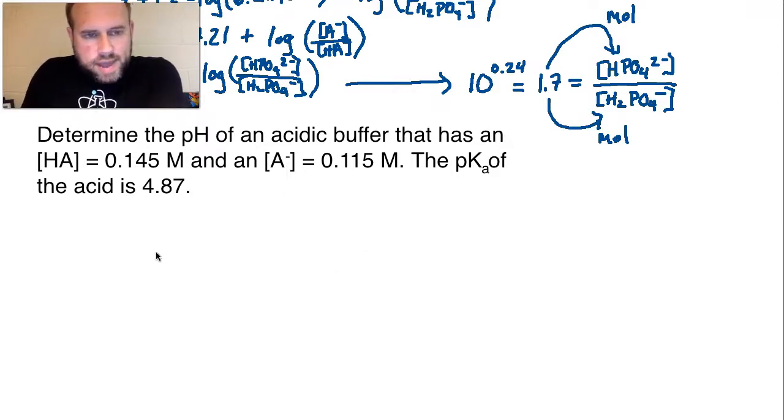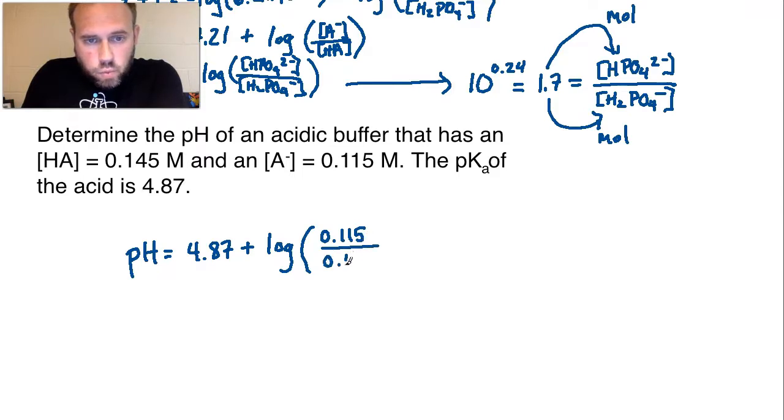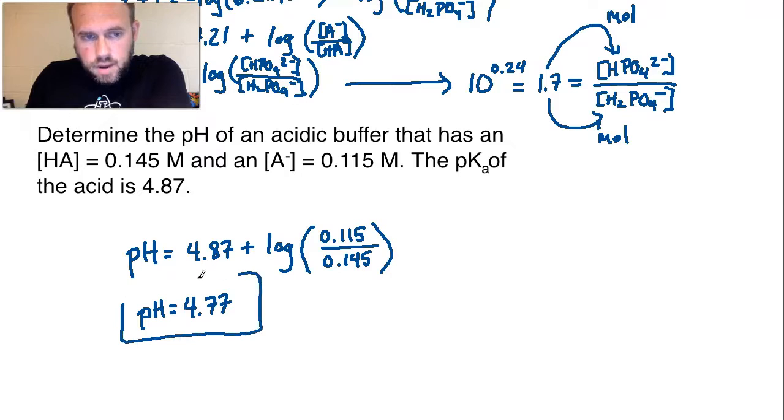Okay, hopefully you had a chance to try that out. So here we go. The pH is what we're searching for here. We know that that's going to be equal to the pKa value which is being given to us. It's 4.87 plus the log of the ratio. Now, remember it is conjugate base over weak acid. So what I need here is 0.115 over 0.145. If I plug this into my calculator I should get the correct answer. And if you do that what you should get is a pH that is equal to 4.77.